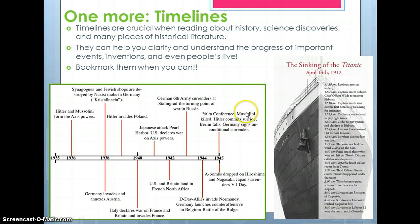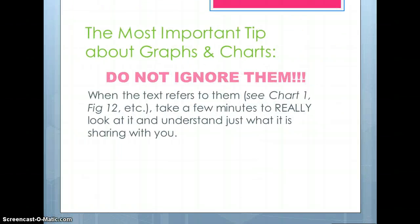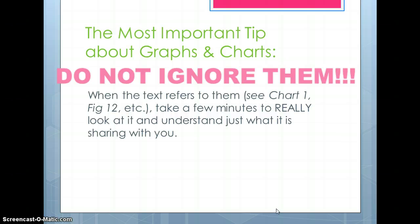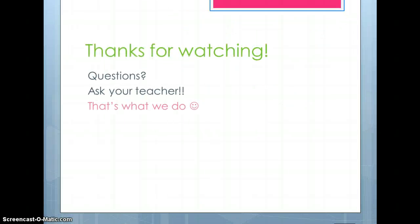The last type are timelines. Timelines are crucial in reading about history, science, discoveries, and many pieces of historical literature. They can help you clarify and understand the progress of important events, inventions, and even people's lives. Bookmark them when you can — that way, when you go through different parts of the nonfiction piece you're reading, you can refer back and say, 'I visually understand it better.' The most important tip about graphs and charts is: do not ignore them. When texts refer to them — it might say 'see chart one,' 'figure 12,' etc. — take a few minutes to really look at it and understand what it is sharing with you. Thanks for watching. If you have any questions, be sure to ask your teacher.